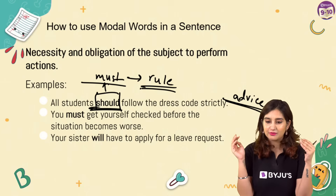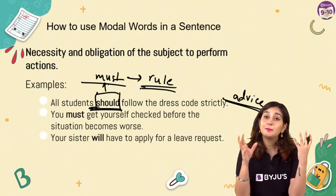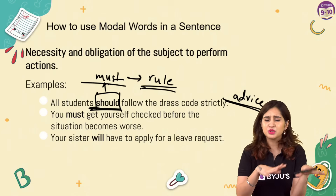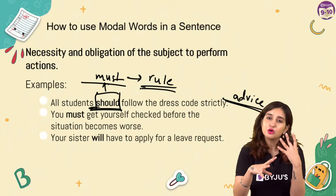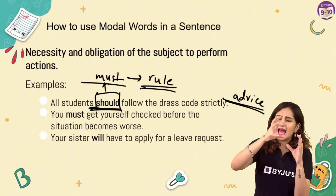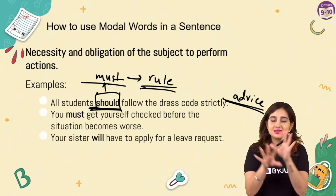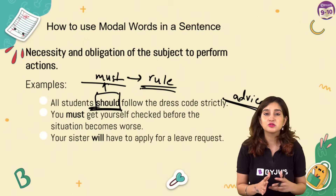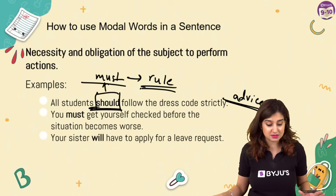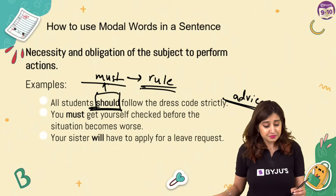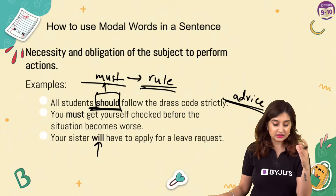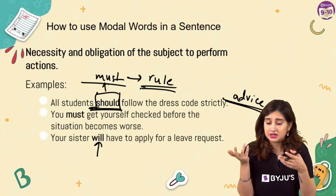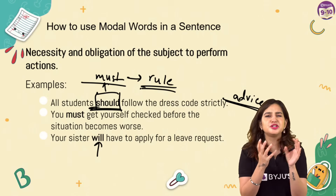Modal verbs are not black and white - it's not like they fit in just one category. There is a lot of overlap. Language is very fluid and can change forms, so don't be rigid that a modal belongs to only one category. There is a gray area in modal verbs. For example, 'your sister will have to apply for a leave request' - here will is talking about necessity, which is not very common for will, but that's what I'm trying to tell you: modal verbs can shape shift a little bit.